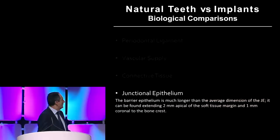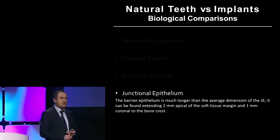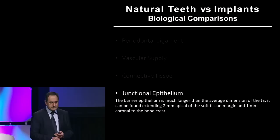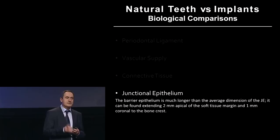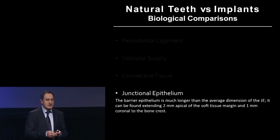Finally, the junctional epithelium, which is also very different in the tooth and the implant. In the tooth it's shorter; in the implants it's much longer and also much thinner. As you recall from your days in dental school, the junctional epithelium acts like a zipper. If there's no plaque, it stays attached. If there's plaque, it opens up very, very quickly. And that's especially true if it's long and thin, like when you have it around implants.